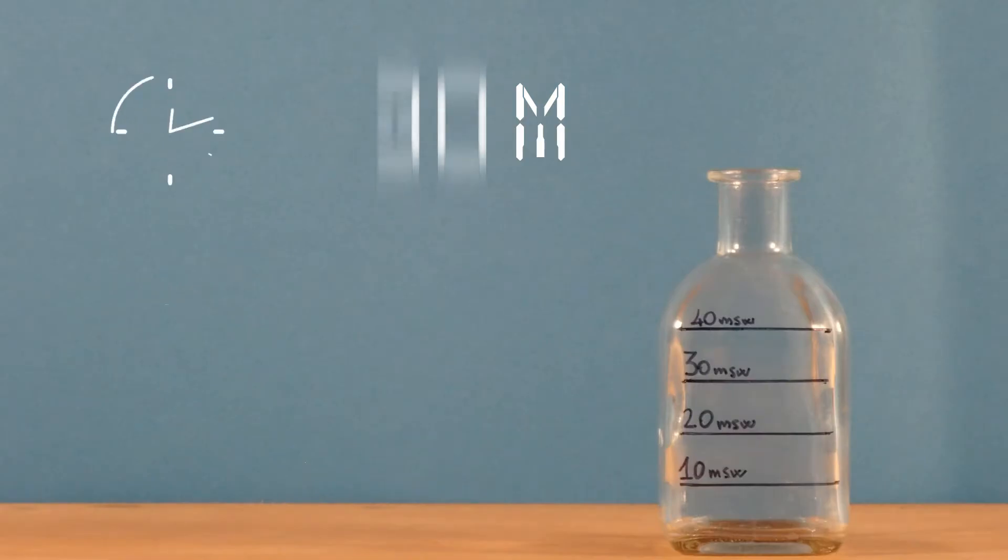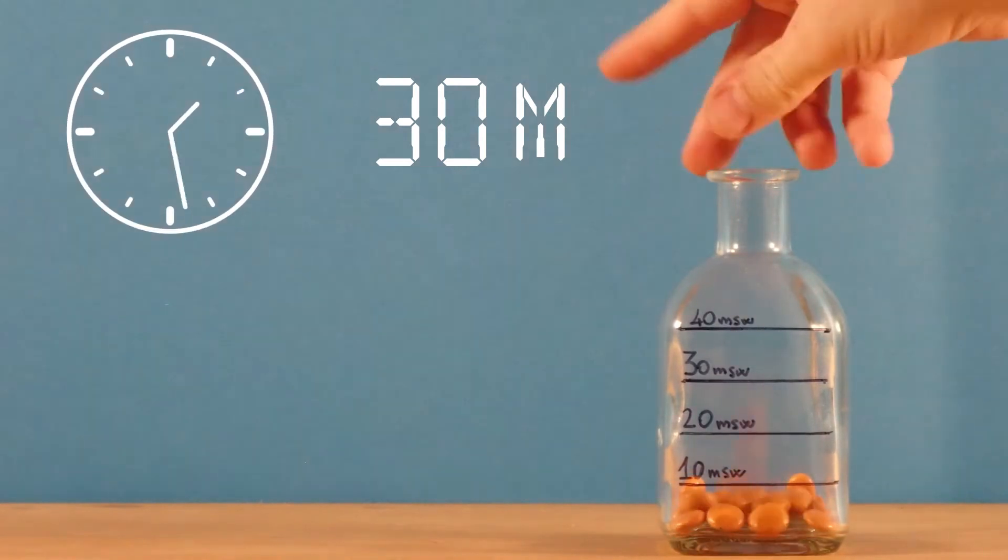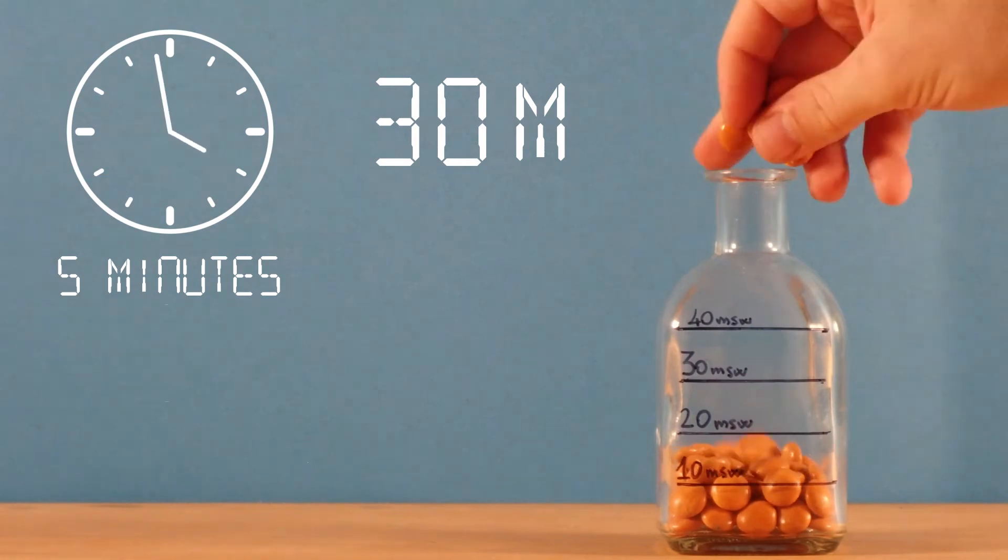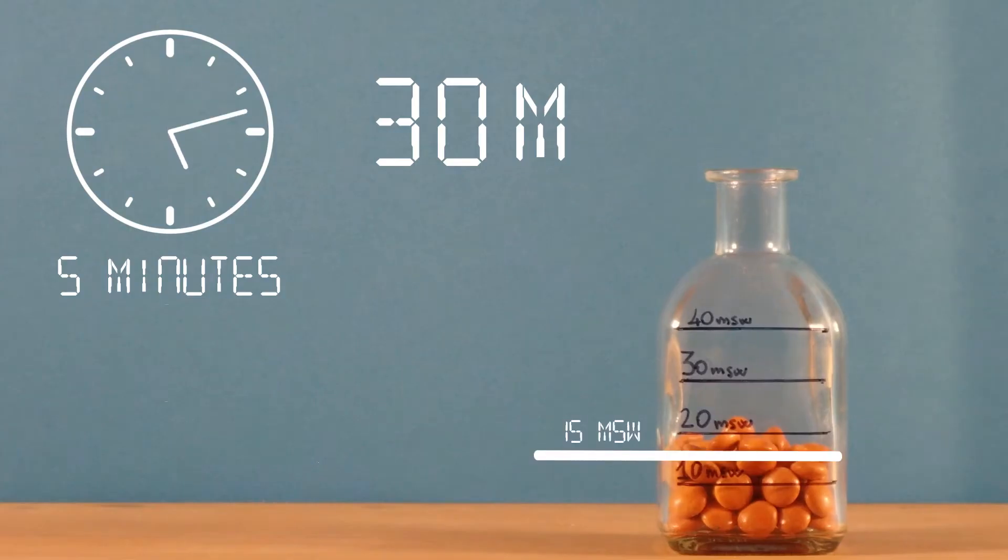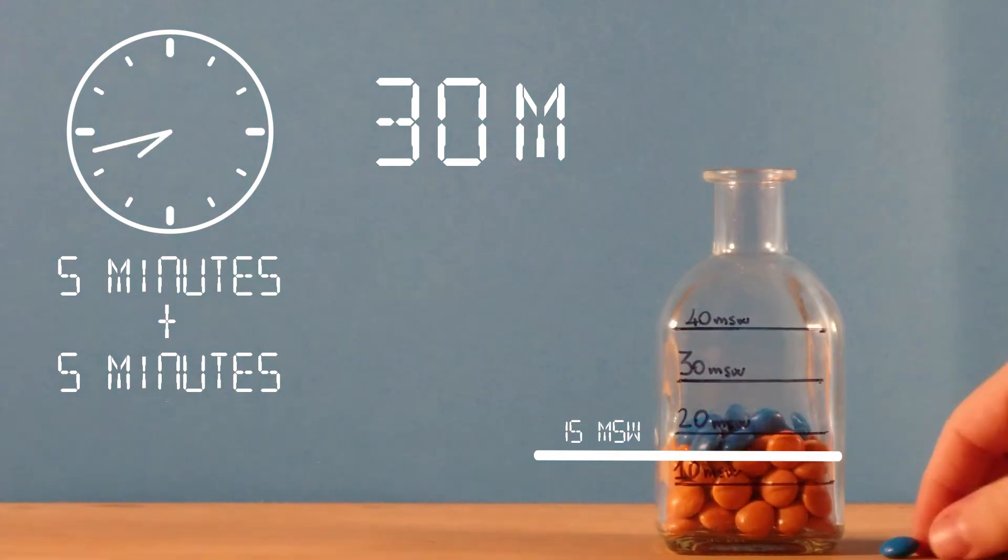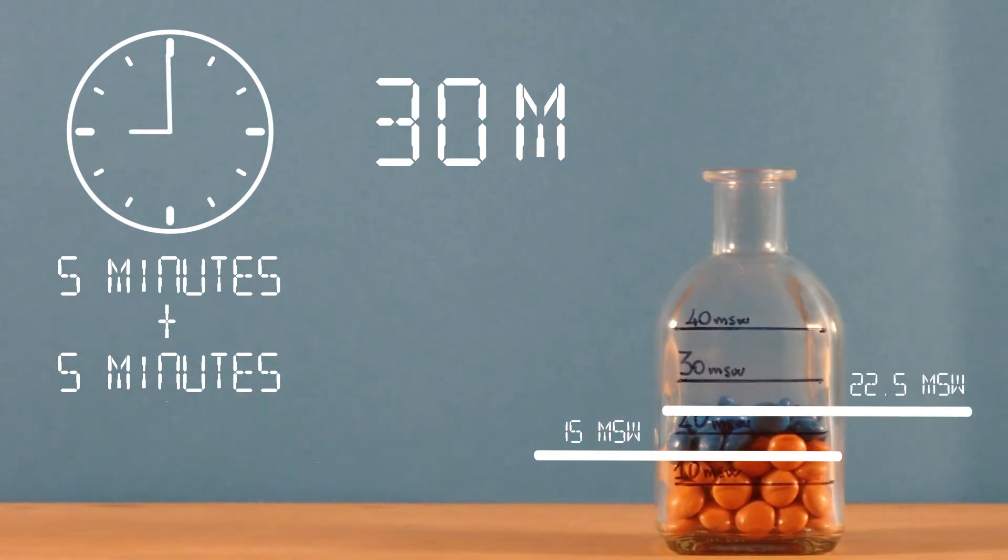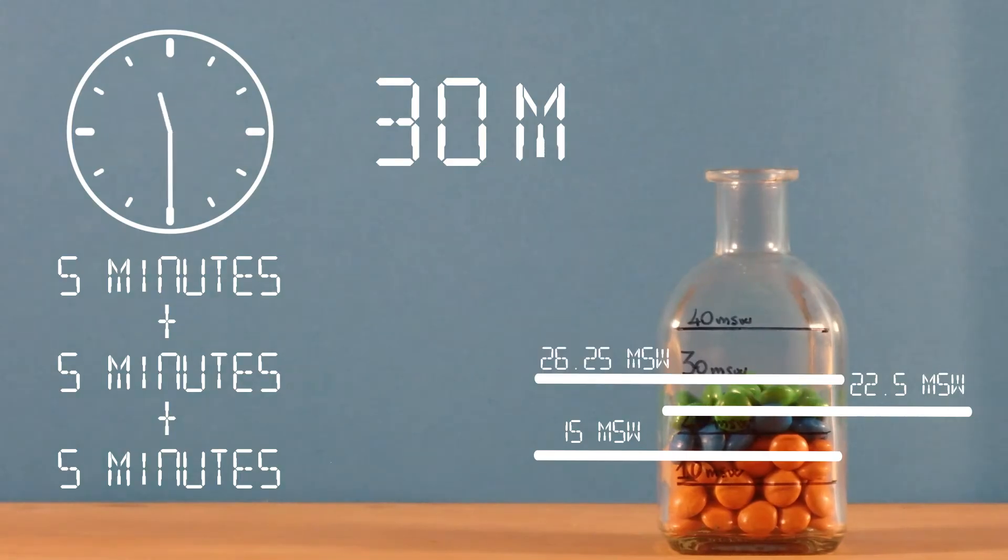At a depth of 30 meters in seawater, a compartment with a halftime of five minutes will take five minutes to reach a nitrogen loading equal to 15 meters of seawater, halfway to saturation. It will then take five more minutes to get to a loading of 22.5 meters of seawater, five more to get to 26.25, and so on.